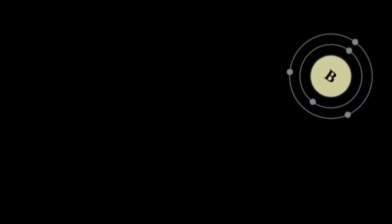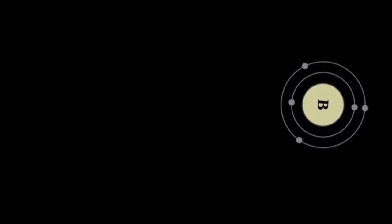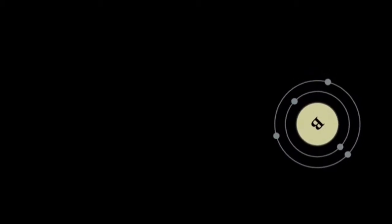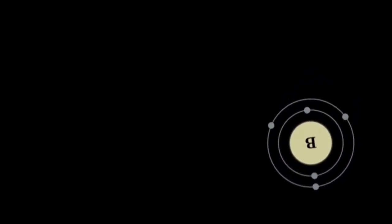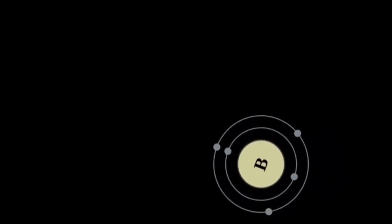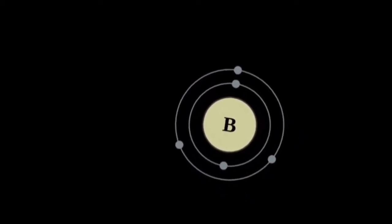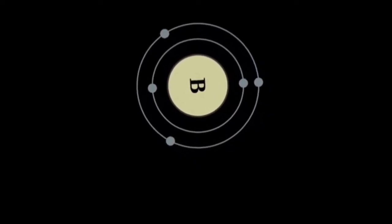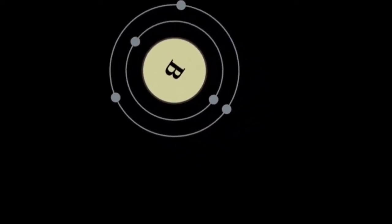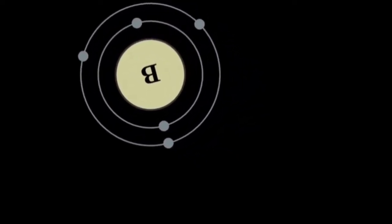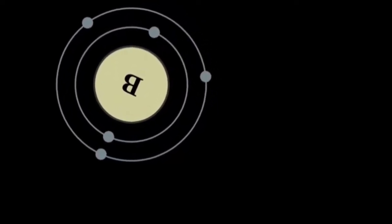Boron is a chemical element with symbol B and atomic number 5. Produced entirely by cosmic ray spallation and supernovae, and not by stellar nucleosynthesis, it is a low-abundance element in the solar system and in the Earth's crust. Boron is concentrated on Earth by the water solubility of its more common naturally occurring compounds, the borate minerals.